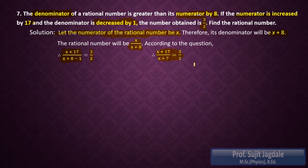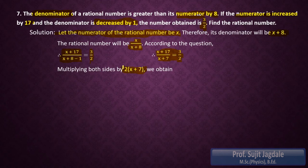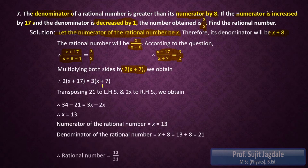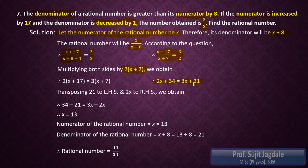Again, you can transpose the denominators to either side or multiply both sides by the denominators. I am using the step of multiplying both sides by 2 into (x + 7). We get 2 times (x + 17) equals 3 times (x + 7), and by simplifying we get 2x plus 34 equals 3x plus 21.